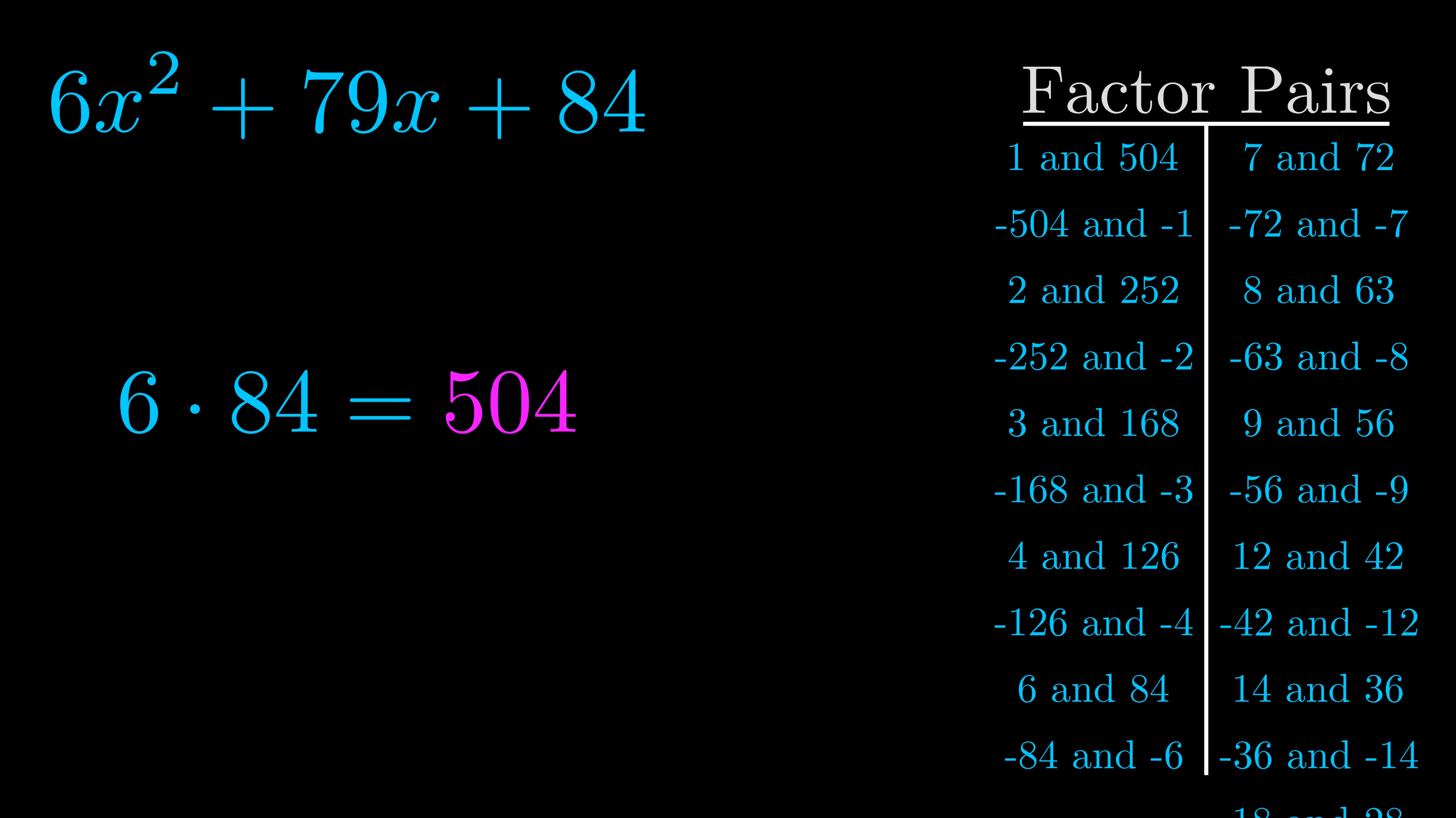The b value is the coefficient on the x term. That's the middle term, the one that we haven't done anything with yet. And really this is the only factor pair that we need.